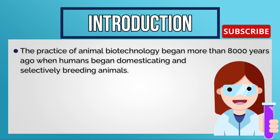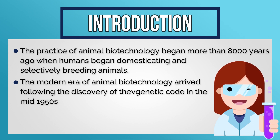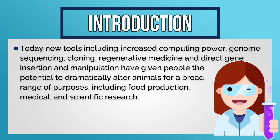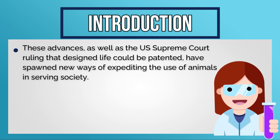The practice of animal biotechnology began more than 8,000 years ago when humans began domesticating and selectively breeding animals. The modern era of animal biotechnology arrived following the discovery of the genetic code in the 1950s. Today, new tools including increased computing power, genome sequencing, cloning, regenerative medicine, and direct gene insertion and manipulation have given people the potential to drastically alter animals for a broad range of purposes including food production and medical and scientific research.